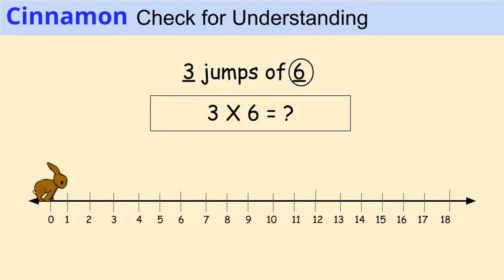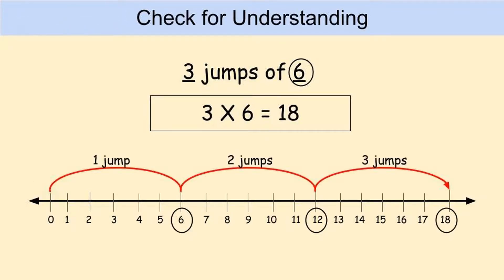Our first contestant is Cinnamon. Cinnamon is going to show us three jumps of six, so the multiplication problem is three times six. Pause the video, create the number line to help you find the product of three times six, then unpause the video when you're ready to check your answer. If you said three times six equals eighteen and your number line looks like mine, then you are correct.